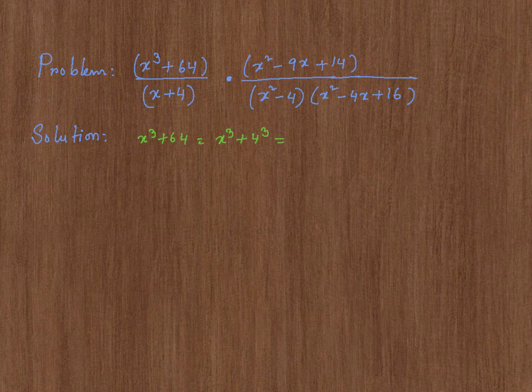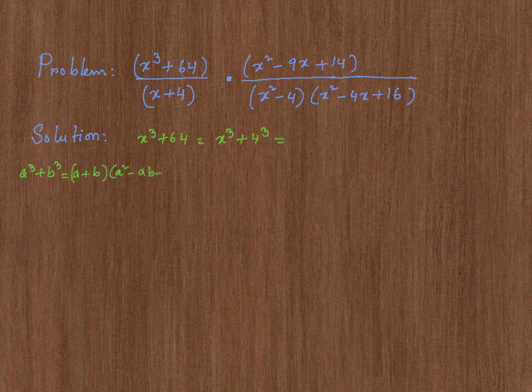Remember the sum of cubes formula? It's going to be a cubed plus b cubed is equal to a plus b times a squared minus ab plus b squared.